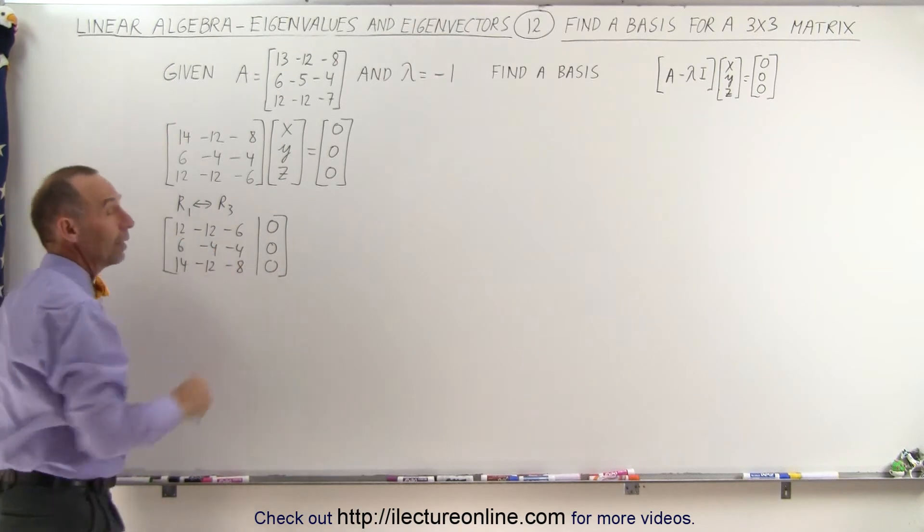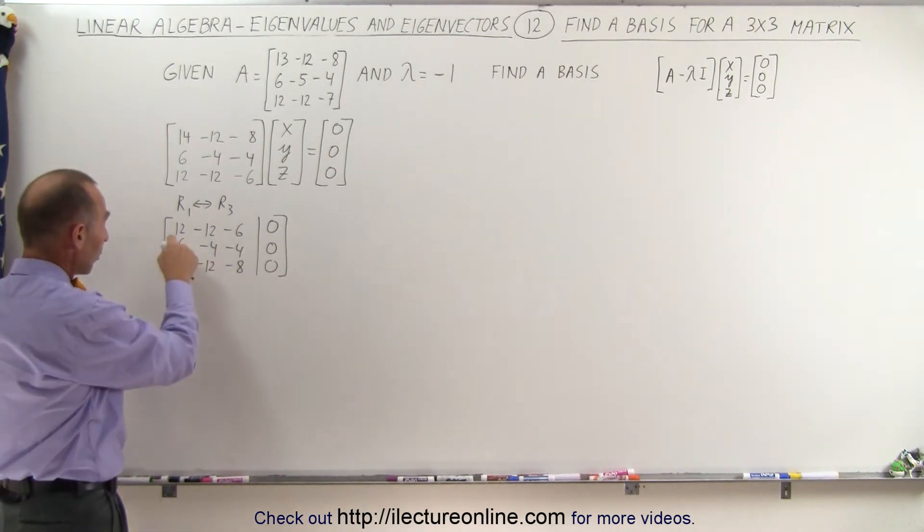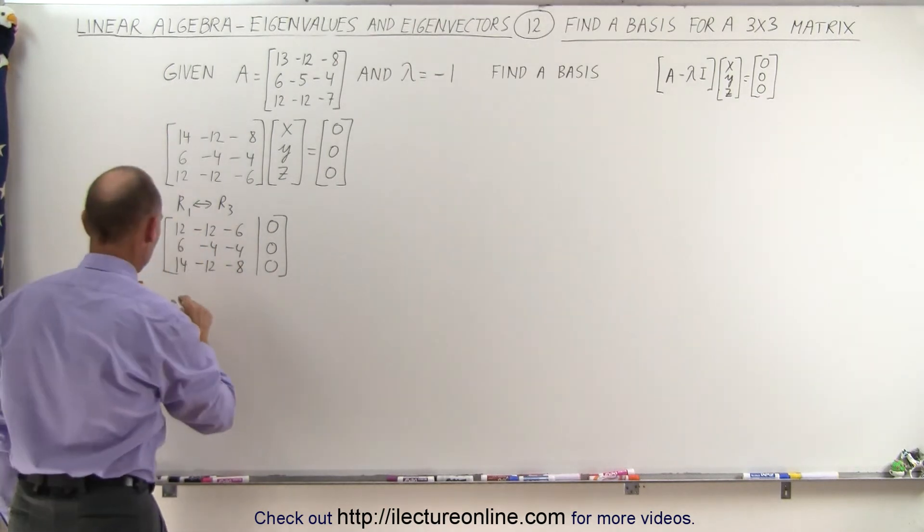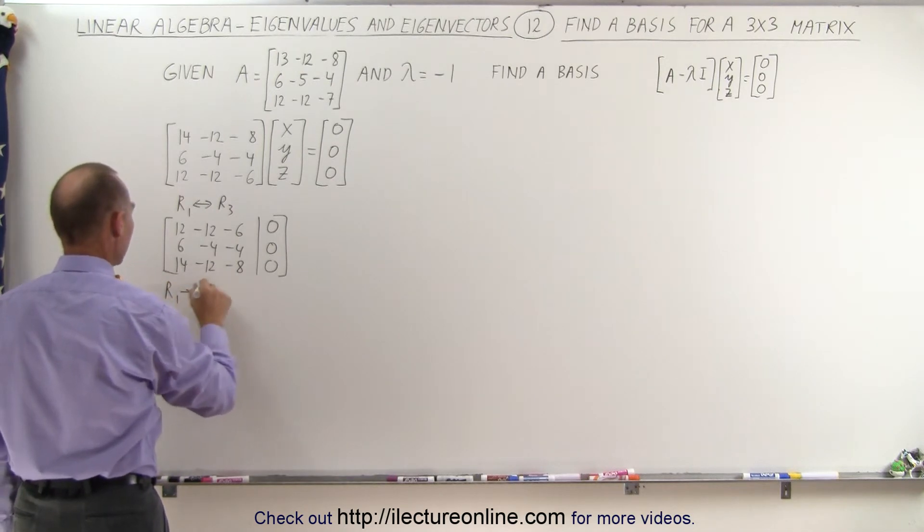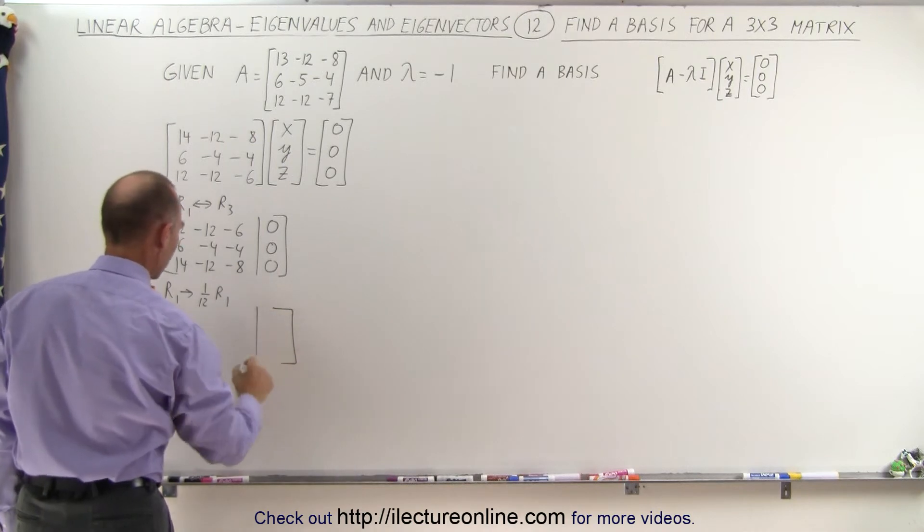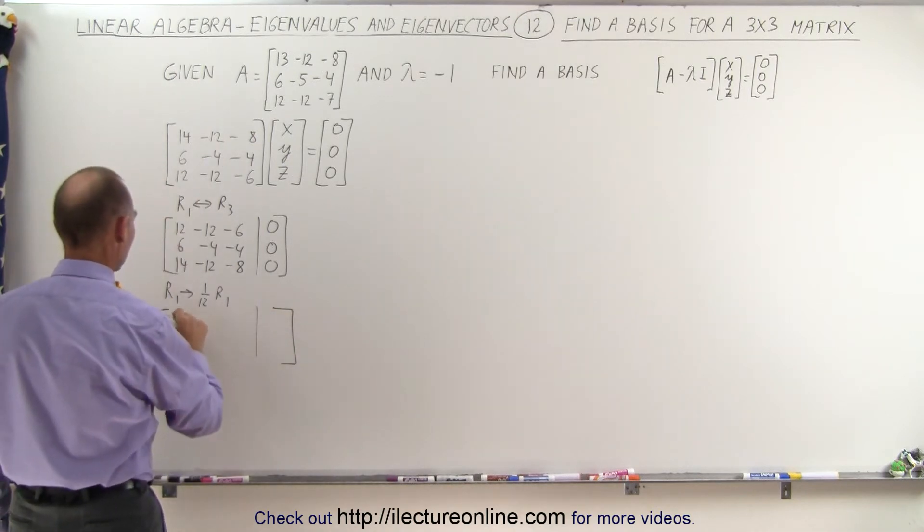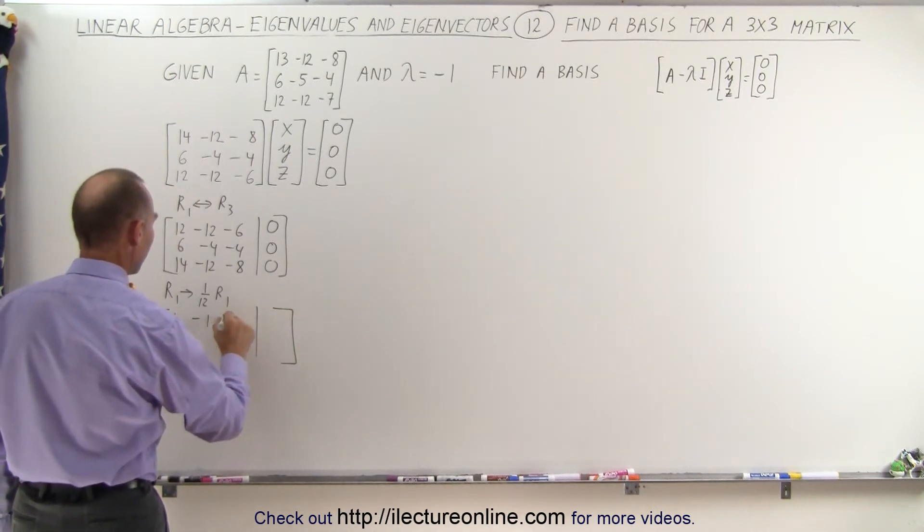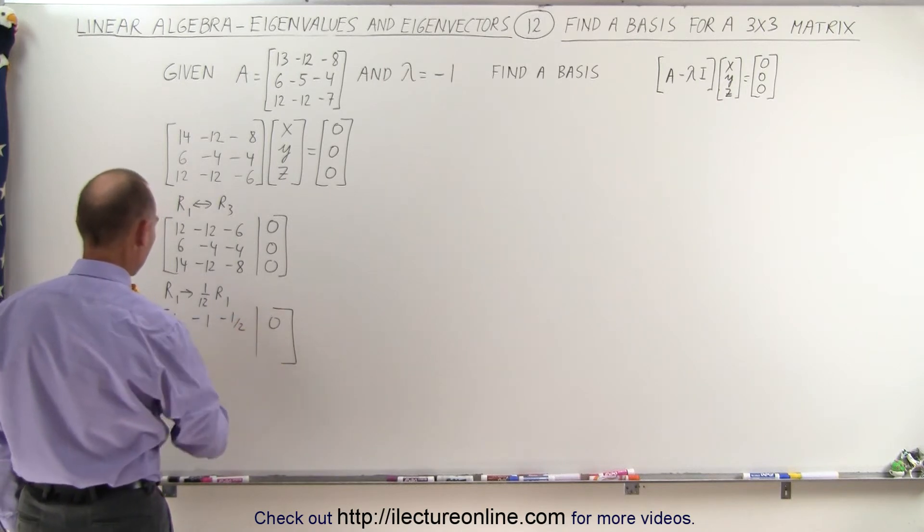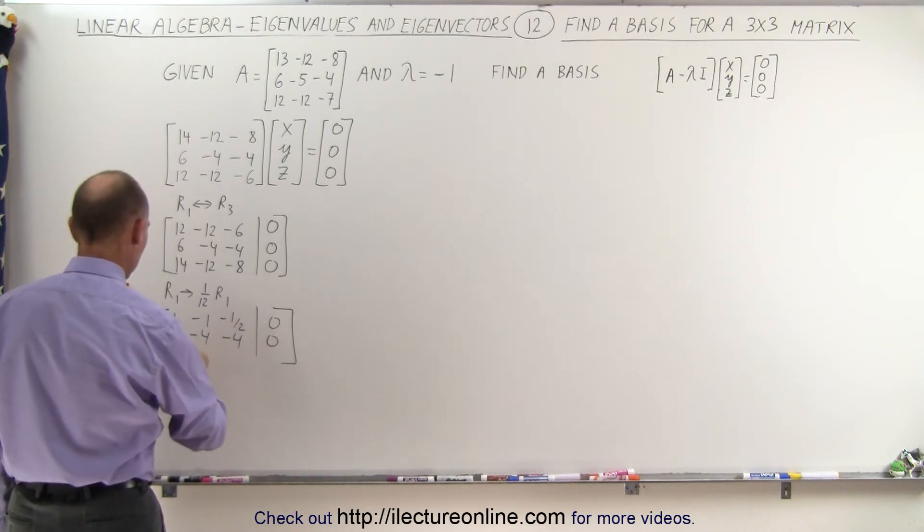Next, I'm going to take row 1 and divide by 12 because I want to turn that into a 1. So we take row 1 and write it as 1 twelfth row 1. When we do that, we get the following augmented matrix. That gives us a 1, a minus 1, and a minus 1 half, 0. Everything else stays the same. 6, minus 4, minus 4, and 14, minus 12, minus 8.